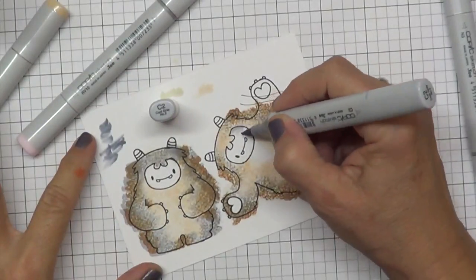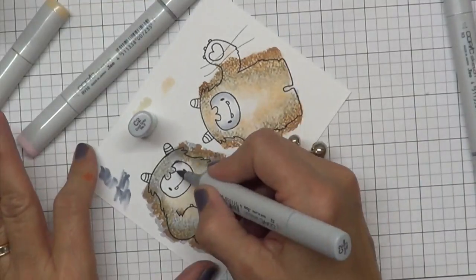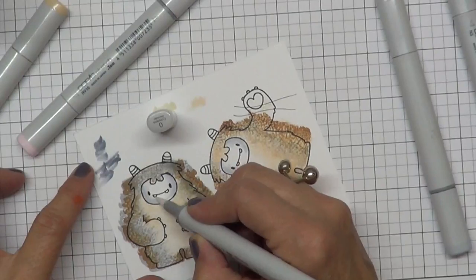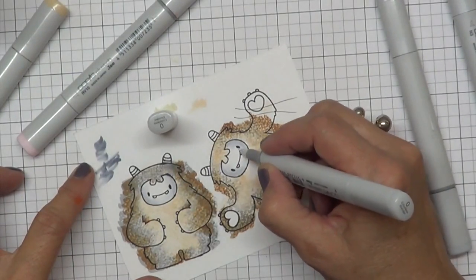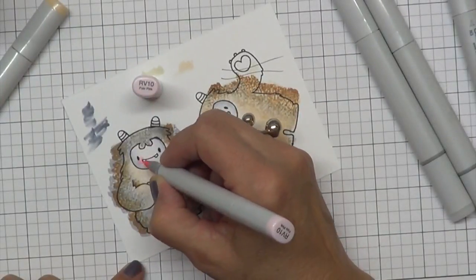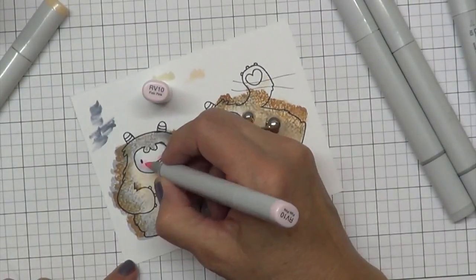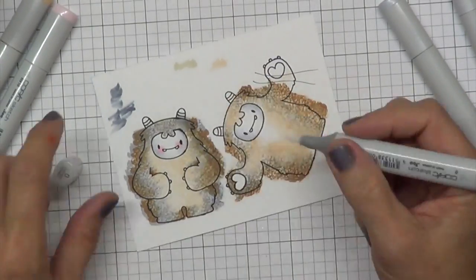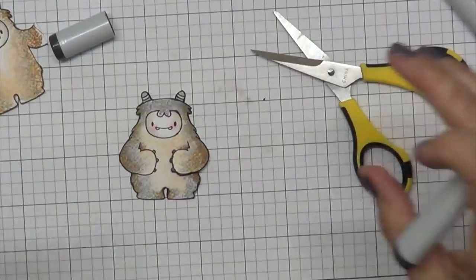All right. So I'm just going to add just a tiny bit of color to their faces and some rosy cheeks with RV 10. And I'm just softening those edges on the faces. And then I'll be done with the faces. Super simple. And then I'll color their little horns off camera and I'll be done. I mean, this came together very quickly.